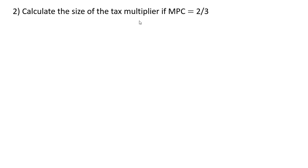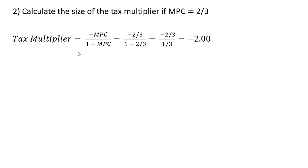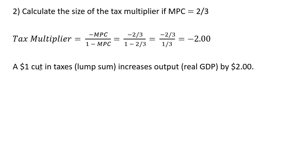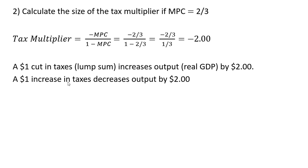Let's calculate the size of the tax multiplier if the MPC equals 2/3. Taking our formula and evaluating it at 2/3: minus 2/3 divided by 1 minus 2/3 is minus 2/3 divided by 1/3, which equals minus 2. So a $1 cut in taxes increases output by $2, or a dollar increase in taxes decreases output or real GDP by $2.